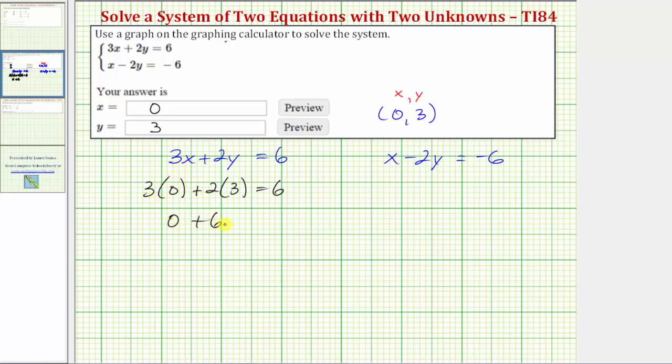0 + 6 is 6. So because 6 = 6 is true, the ordered pair satisfies the first linear equation.